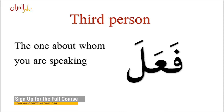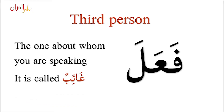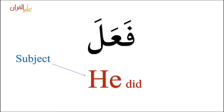Third person is the one about whom you are speaking. It is called gha'ib — third person is called gha'ib, remember this. And fa'ala, 'he did' — the subject 'he' is already in the verb. Fa'ala does not mean just 'did'; fa'ala means 'he did.' So the 'he' subject is already in the verb.